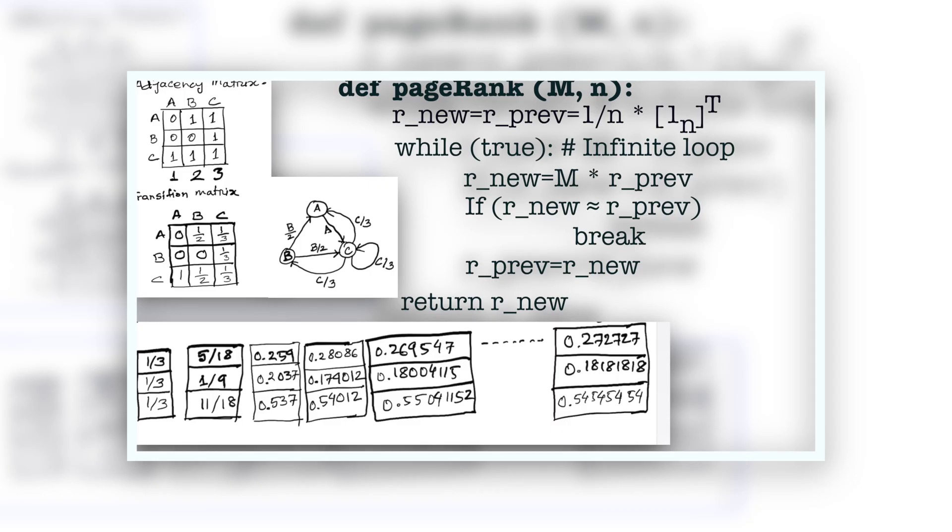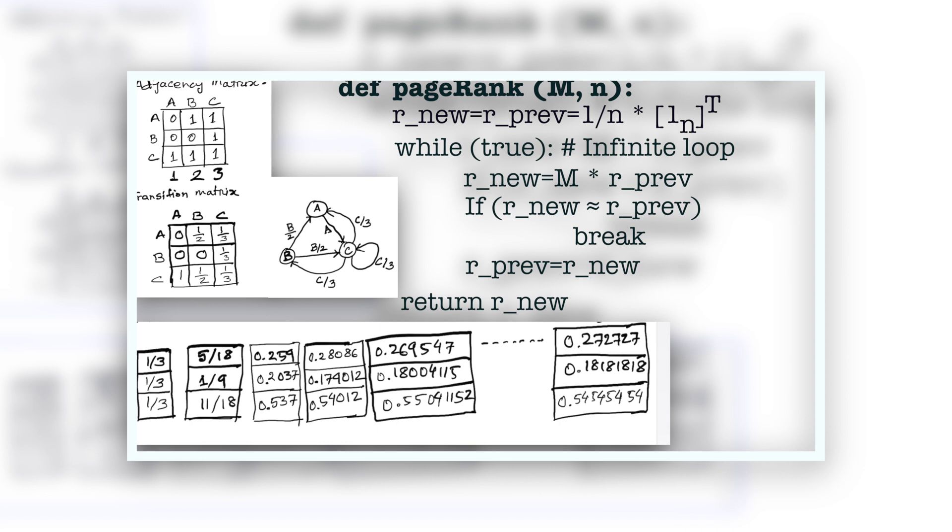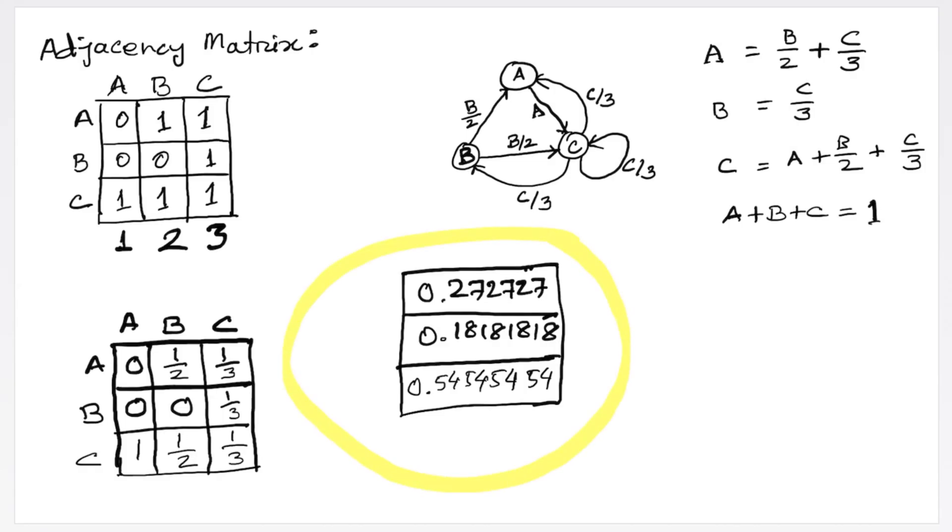Therefore, whatever we can solve using algebra we can solve it using the matrix multiplication operations between the transition matrix and the latest page rank vector. One issue with the algebra based solution is that it is hard to implement, whereas the process we used to multiply two matrices - that is, the transition matrix and the latest page rank vector - that process can be implemented easily. Now let's say that this is our page rank vector. How does a search engine use this page rank vector?